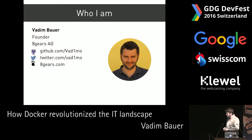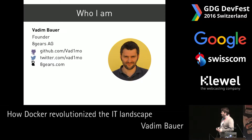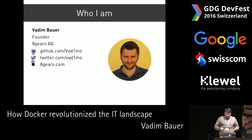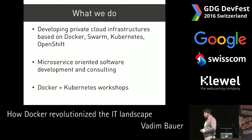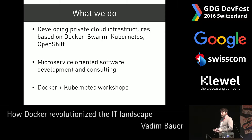Before we start, let me introduce myself. My name is Vadim. I work for the company called 8Gears. If you would like to find more about me, you can follow me on GitHub or on Twitter — you can see my repositories and see what I'm doing. I'm working for 8Gears and we're actually developing software, and today this also involves developing cloud infrastructures.